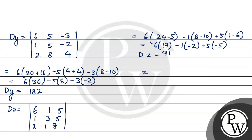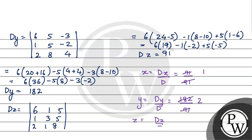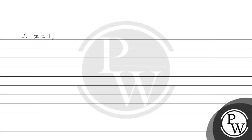Now let us find x, y, and z. x equals Dx upon D, and the value of D is also 91, so x equals 1. y equals Dy upon D, and Dy is 182 and D is 91, so y equals 2. z equals Dz upon D, and Dz is 91 and D is 91, so z equals 1. Therefore, the final answer is: x is equal to 1, y is equal to 2, and z is equal to 1. I hope you understood it well.